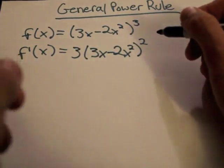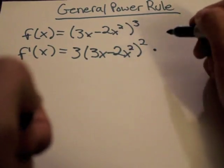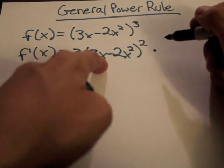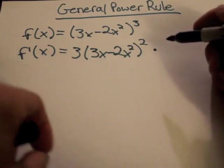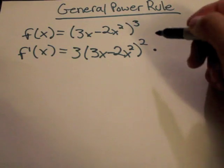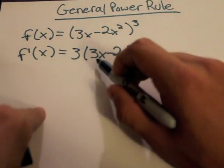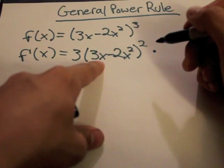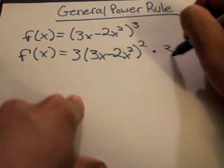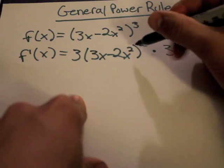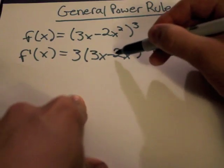Then the next step is to multiply that by the derivative of the inside function, which is 3x minus 2x squared. You can use the power rule for that as well. First, the derivative of 3x is just 3. Then for minus 2x squared, we use the power rule.